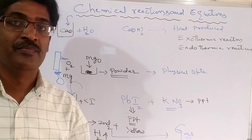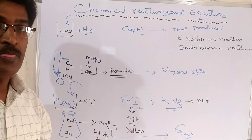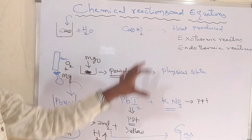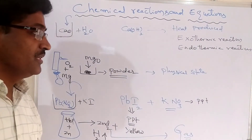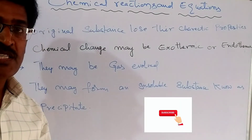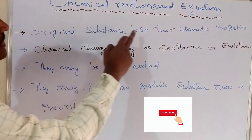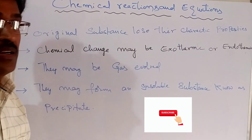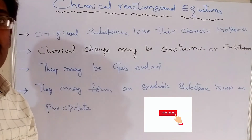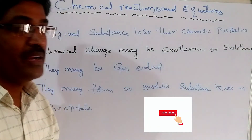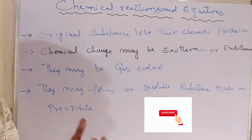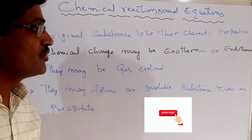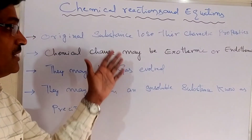During a chemical reaction, a permanent change takes place. In all situations, the initial and final substances are not the same — different products are formed. From these experiments, we conclude: original substances lose their characteristic properties during a chemical reaction. The initial substance is different and the final substance is different. A chemical change may be exothermic or endothermic, a gas may be evolved, or an insoluble substance called a precipitate may be formed.